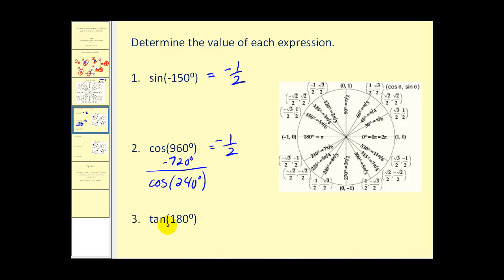Now let's look at tangent of 180 degrees. Here is the initial side, and we rotate counterclockwise 180 degrees to find the terminal side. We use this point to determine the tangent of 180 degrees. Remember, tangent is y over x, so we have zero over negative one, which equals zero.